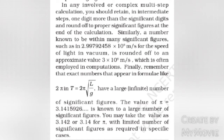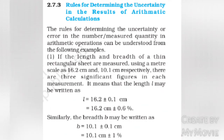In any involved or complex multi-step calculations, you should retain one digit more than the significant digits in intermediate steps and round off to the proper significant figures at the end. A number known with many significant figures, such as 2.99792458 × 10^8 m/s for the speed of light in vacuum, is rounded off to the approximate value 3 × 10^8 m/s often used in computations. Remember that exact numbers appearing in formulae, like 2π in t = 2π√(l/g), have an infinite number of significant figures; π is known as 3.1415926… and may be taken as 3.142 as needed.